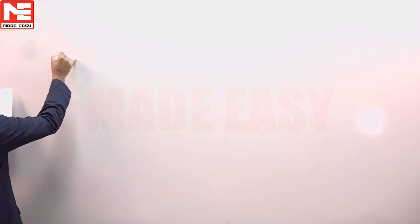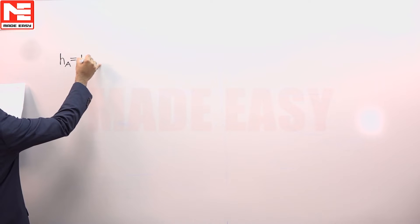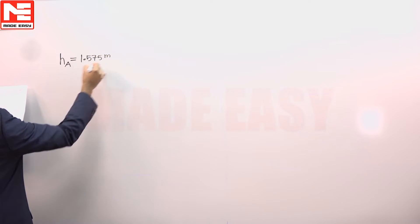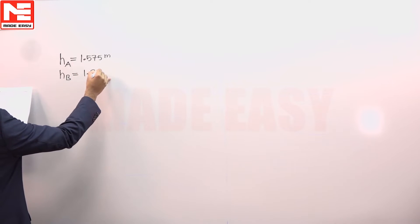In this question, when the instrument is nearby to A, the staff reading taken at A station is 1.575 meters and at B it is 1.805 meters.